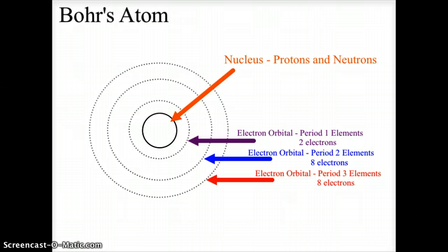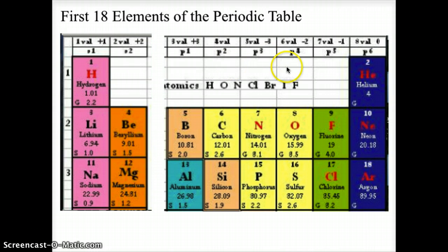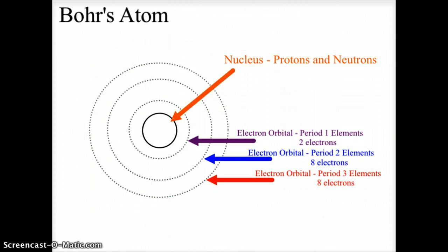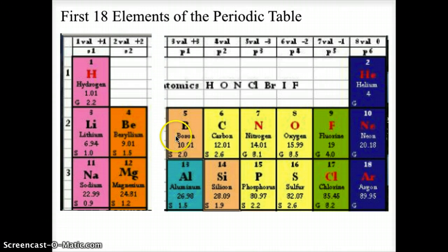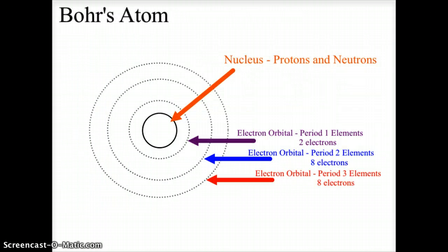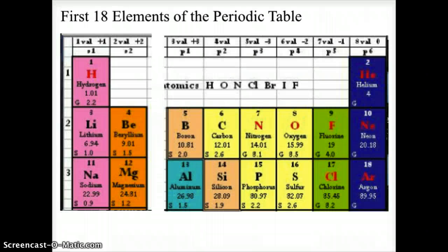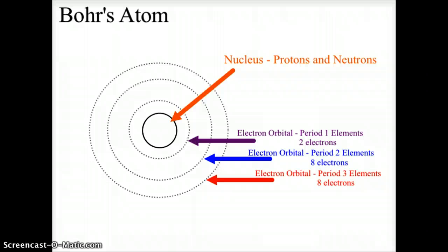That first orbital houses only two electrons, representing the first two elements of the periodic table — hydrogen and helium. The second orbit can house up to eight electrons, representing the eight elements in the second period of the periodic table. The third orbit likewise houses eight electrons, because that third row also has eight elements. Bohr's model very closely resembles the elemental structures found in the periodic table.